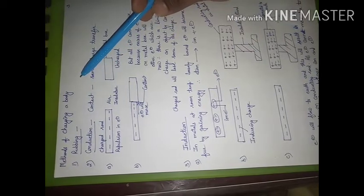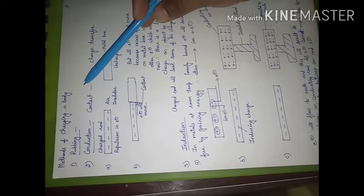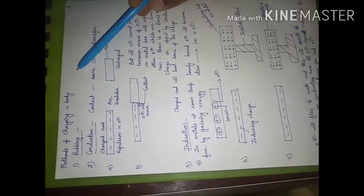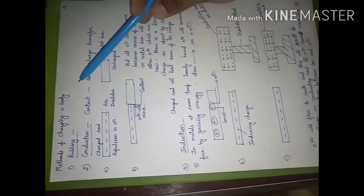Today we will do methods of charging a body. Three methods we will consider: one is rubbing, second is conduction, and third is induction. Rubbing we have done already — when we work against friction, both bodies get charged due to transfer of electrons. One is gaining, the other is losing. The object that is gaining will get negatively charged and the object that is losing will get positively charged.